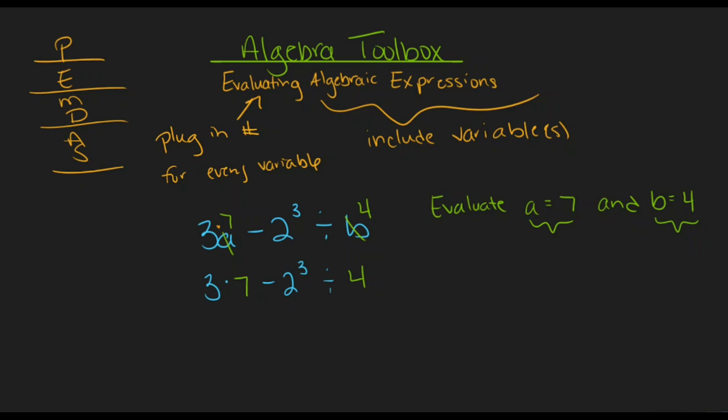Looking through this expression, I have several different operations happening, but I don't have any grouping symbols or parentheses, so we're done with P. That means we can move on to E exponents, which means I'm going to focus first here at 2 to the third. Well, 2 to the third power is 8, so I can rewrite this expression, now with that represented as 8. So we'll have 3 times 7, minus 8, divided by 4.